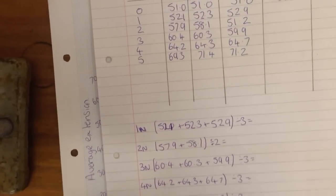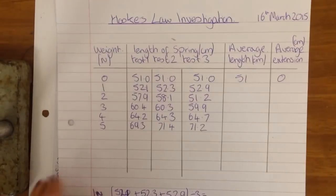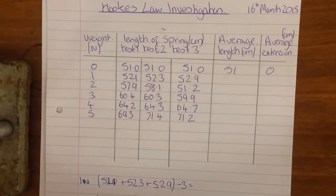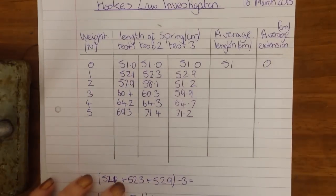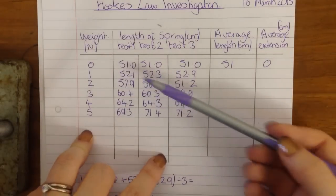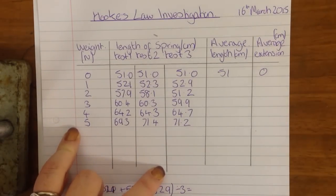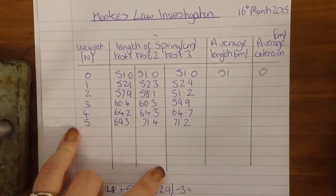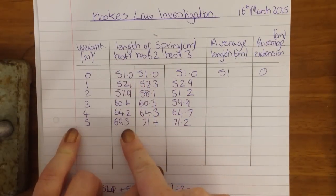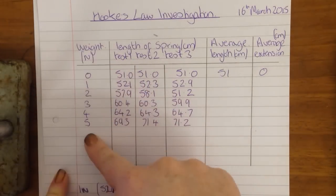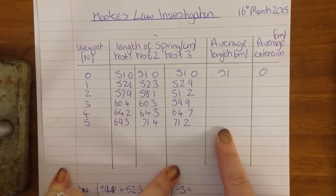So like I said I've already done these experiments and this is what my results table looks like. So when you do this experiment, whenever you do any experiment, you need to make your results table so you're actually writing down what you measured. So I was measuring the length of the spring with all these different weights added on it and then I'm going to work out the average.